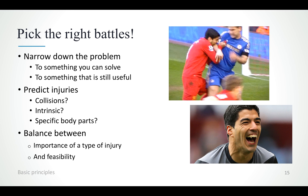Let's say that you want to predict injuries. What does this entail? Does this entail collisions — for example, two players bumping into each other? Are we talking about intrinsic injuries, such as is usually the case with overuse injuries, or extrinsic injuries as well? Are we talking about specific body parts? For example, do we care about head injuries or just injuries in the lower limbs?